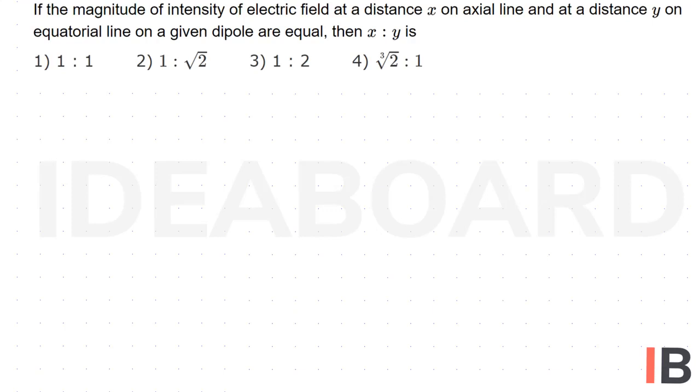We know the expression for electric field intensity on axial line of the dipole, which is equal to 1 by 4π epsilon naught, 2p by x cube. And along the equatorial line we know 1 by 4π epsilon naught, that is p by y cube.